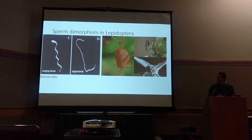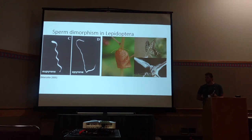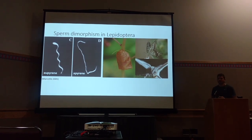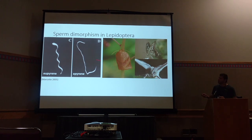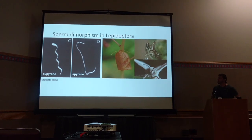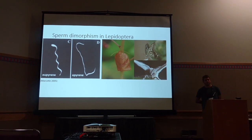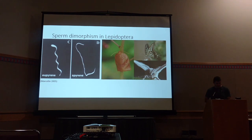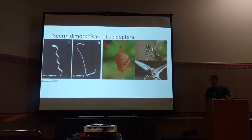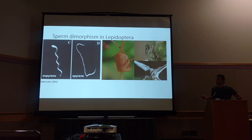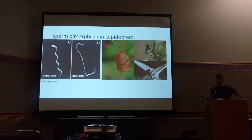Today we're going to come at that from a very specific angle. We're going to put on our molecular evolution hats and look at different selection pressures that might be affecting the two cell types, because one of the hypothesized roles of apyrene sperm is that they're involved in sperm competition.